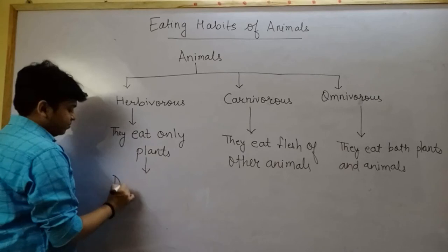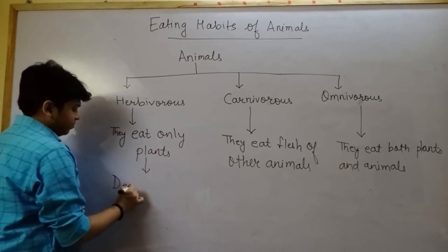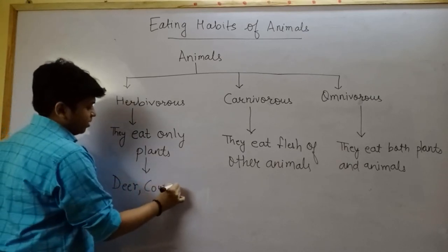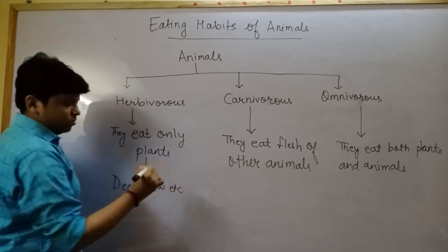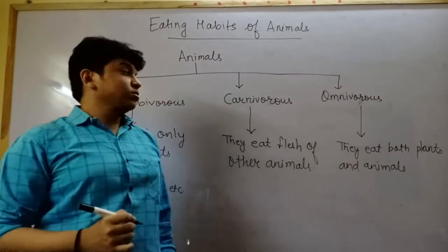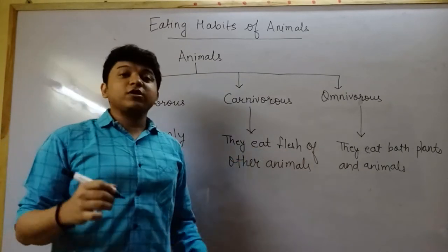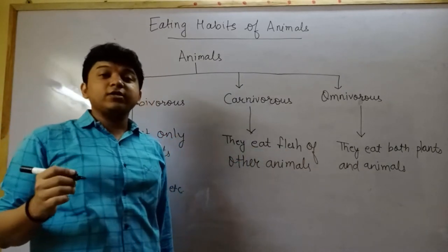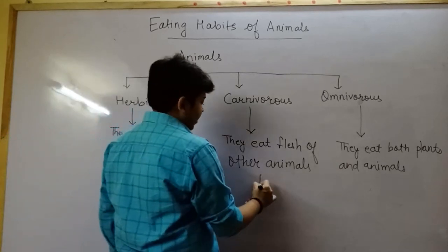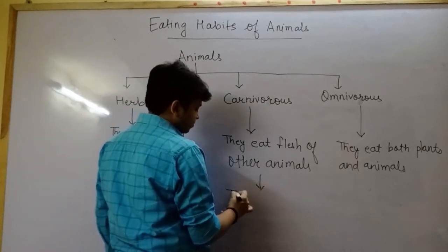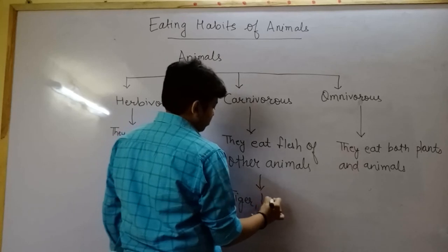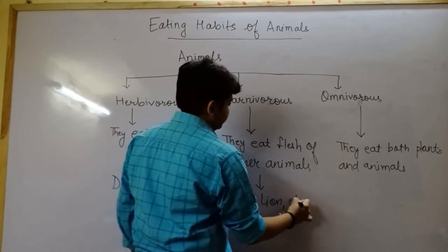Some examples of herbivorous animals are deer, cow, etc. Some examples of carnivorous animals, who eat only flesh of other animals, are tiger, lion, etc.